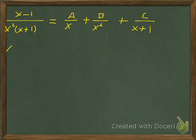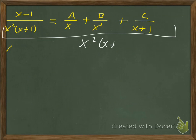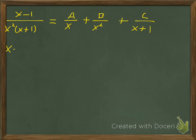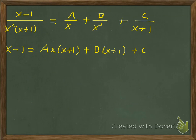We need to find A, B, and C. We multiply through by x²(x+1) to clear the fractions. The left-hand side gives x−1. On the right: A times x(x+1) — since one x cancels from x² — plus B times (x+1) since the x²'s cancel, plus C times x² since the (x+1)'s cancel. So: x−1 = Ax(x+1) + B(x+1) + Cx².